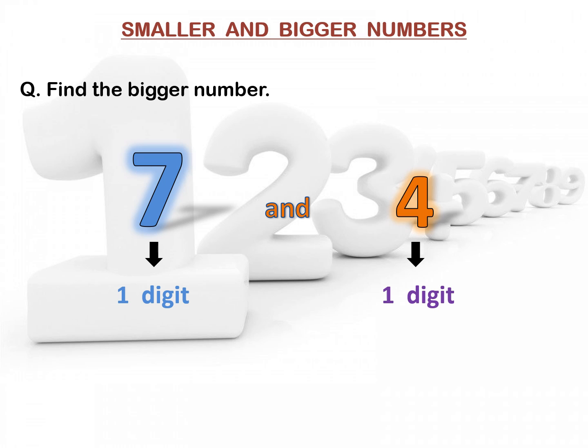Now, let us start counting: 1, 2, 3, 4, 5, 6, 7. We have reached both the numbers. While counting, 7 comes after 4. So, 7 is the bigger number.